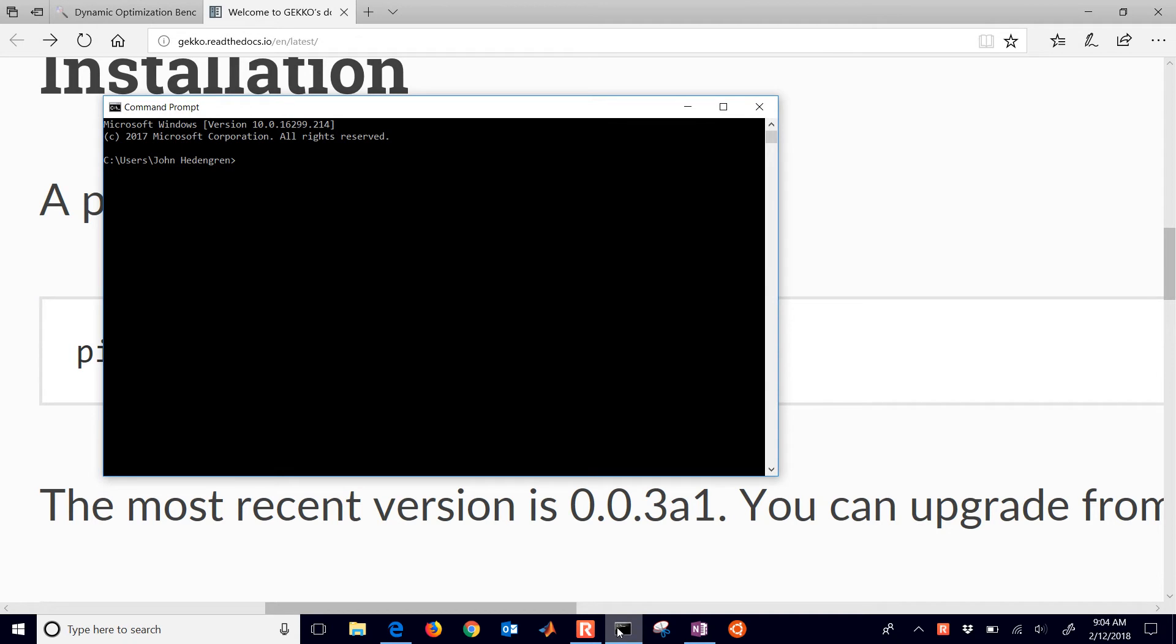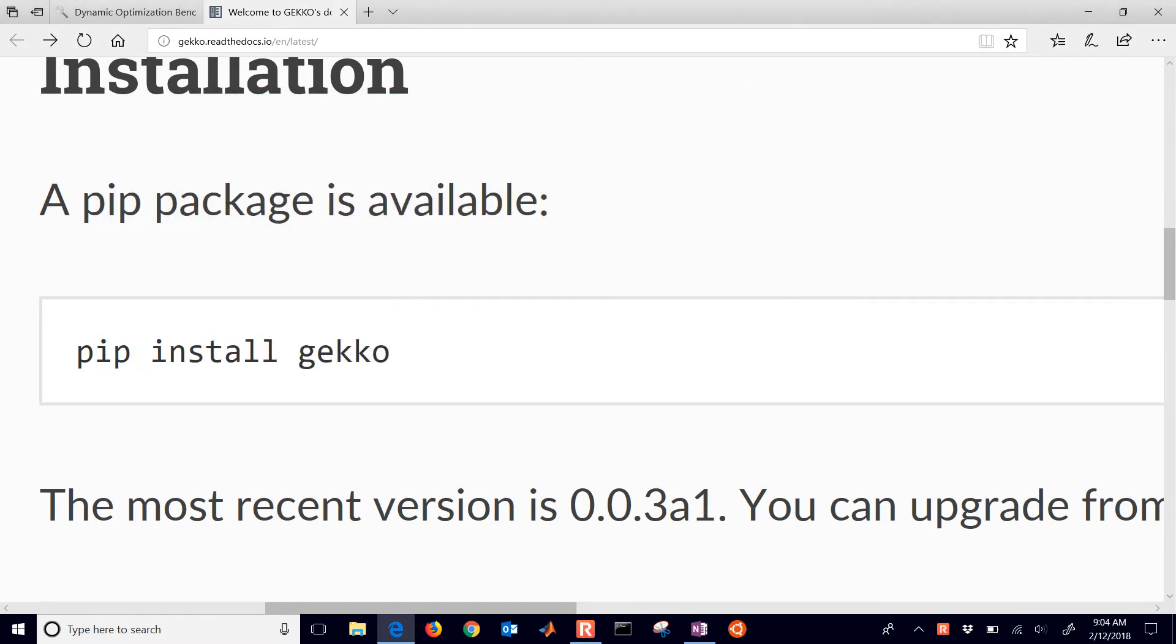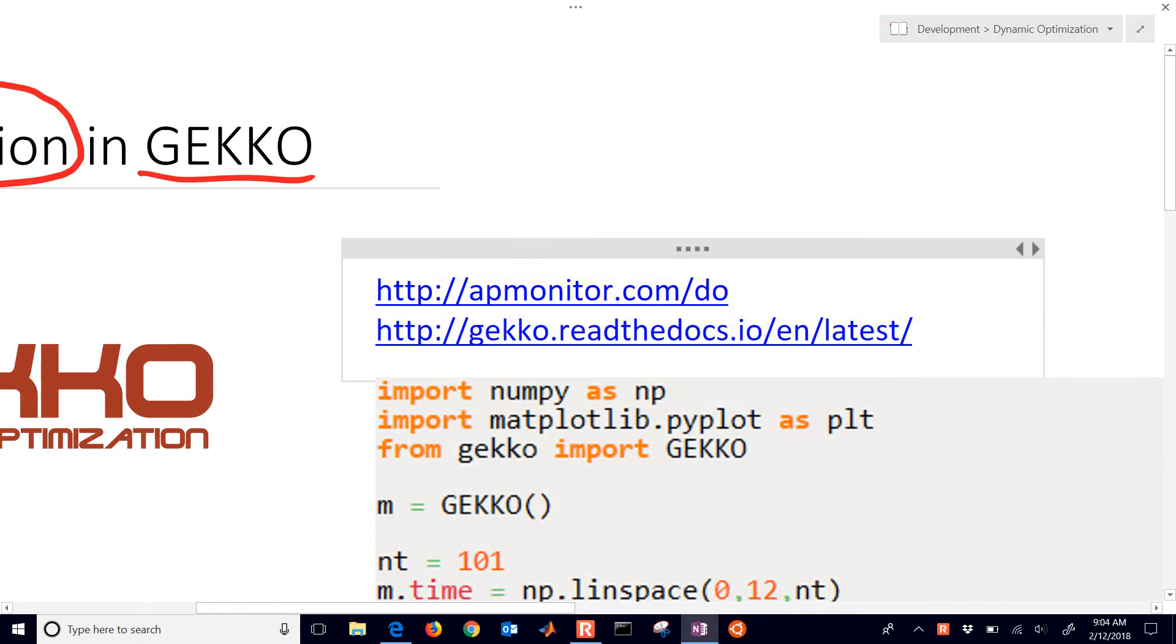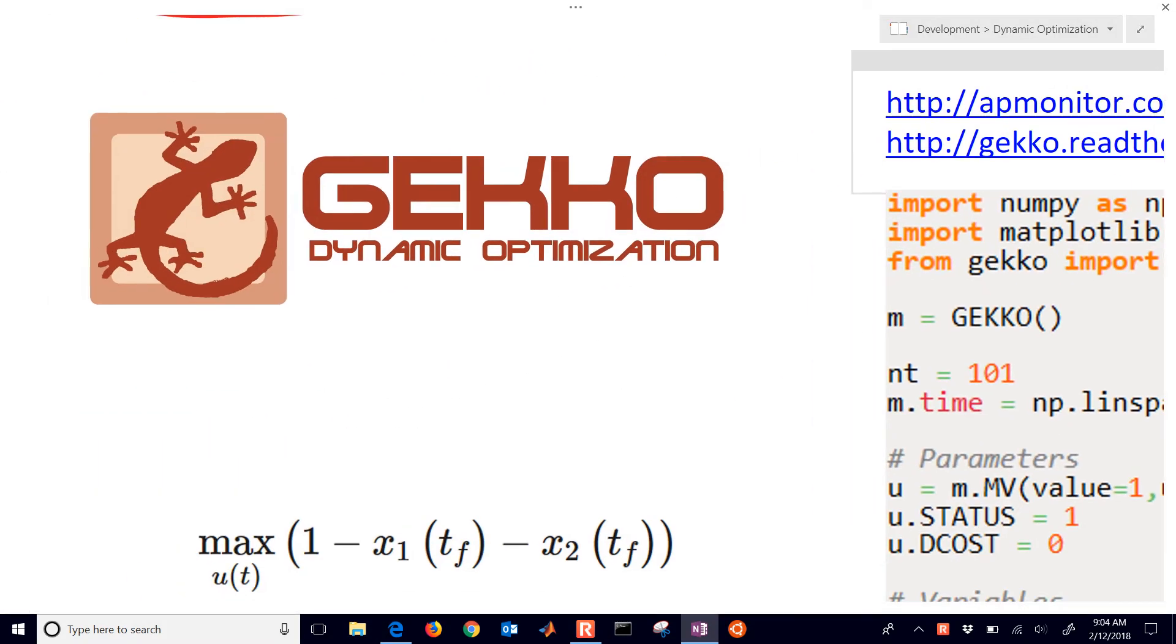So if you open up a command prompt, I'll do pip install gecko. And then I'll have the package installed. Next, I'll need to look at the optimization problem. We'll set it up and solve it in Python.